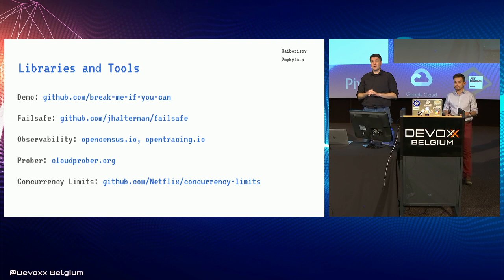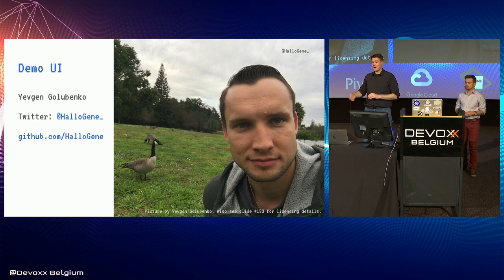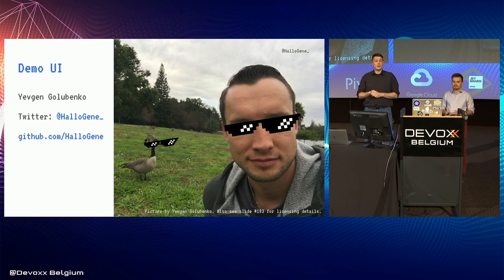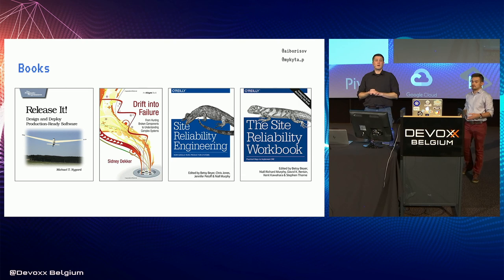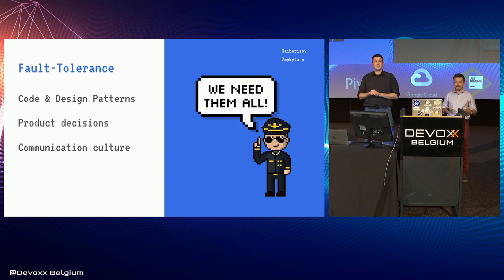Here are some of the libraries and tools we use to make our system more transparent and fault tolerant — we'll share slides so you can check them out. The first link is the code of our demo with all services. We'd also like to thank Evgeny who wrote the whole UI part. If you want to learn more about building fault-tolerant systems, start with the recommended books. Remember there is no silver bullet: good fault tolerance is not achieved overnight — it's a combination of right code and design patterns, good product decisions, and proper communication culture.